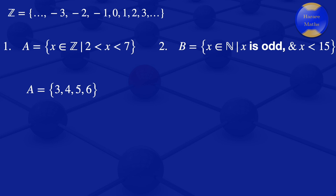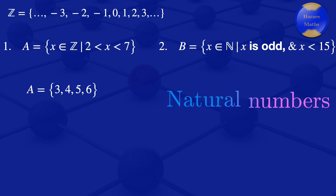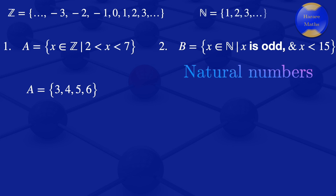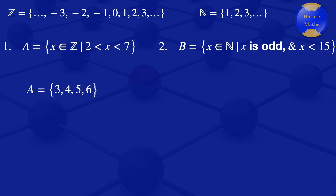We have now listed the elements for set A. Moving on to set B, we are looking at elements x which are natural numbers. Natural numbers are the counting numbers: 1, 2, 3, and so on up to infinity. We want those natural numbers that are odd and less than 15.